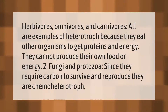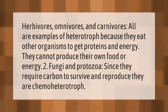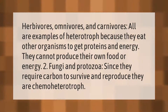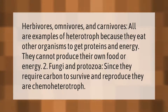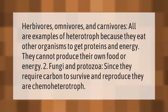Herbivores, omnivores, and carnivores are all examples of heterotrophs because they eat other organisms to get proteins and energy. They cannot produce their own food or energy. Fungi and protozoa, since they require carbon to survive and reproduce, are chemo-heterotrophs.